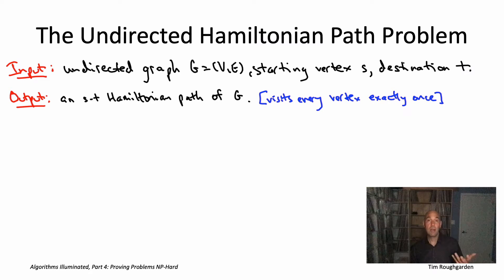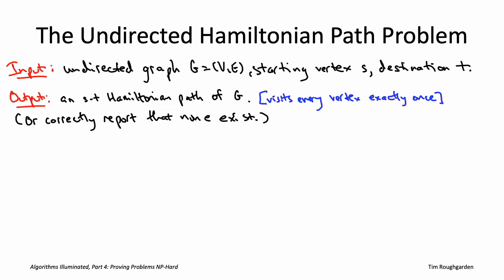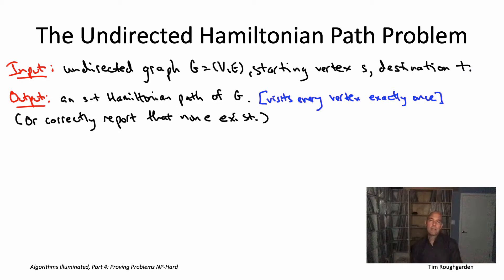The path should visit every vertex exactly once. Of course, if the graph does not have any Hamiltonian paths, we would like an algorithm to correctly declare as much. We know that the directed version of the Hamiltonian path problem is NP-hard — we proved that in the last video.